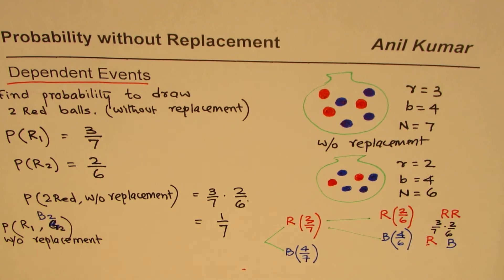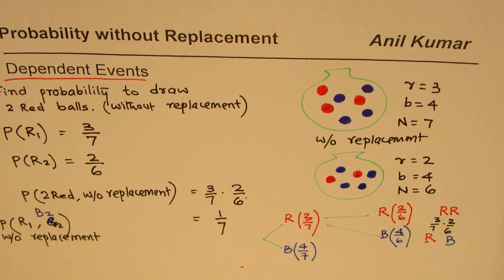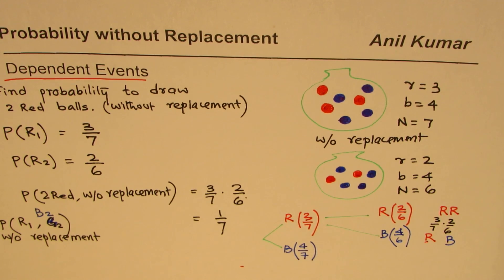I hope with this example you understand the basic concept of dependent events. Events are dependent when the first event affects the following event, as it does in this particular case. I'm Anil Kumar — you can always share and subscribe to my videos. Thank you and all the best.